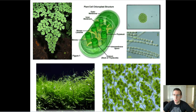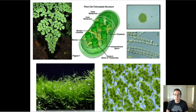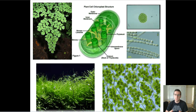In the last video we talked about the difference between producers and consumers, or autotrophs and heterotrophs, and we also spoke about the fact that while energy flows through the ecosystem, matter is recycled through the ecosystem. Now in this video I want to focus on the types of autotrophs.